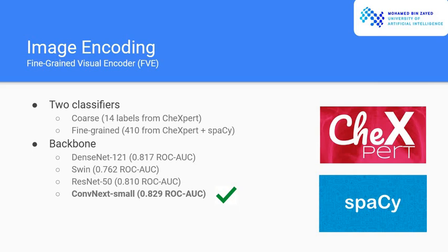Second method is a fine-grained visual encoder. It consists of two classifiers: one coarse classifier that is trained on 14 labels taken from the CheXpert labeling library. The second classifier is based on fine-grained labels that we got using CheXpert and SpaCy. SpaCy is an NLP library. Basically we got extra labels in the form like severe pneumonia, moderate pneumonia, et cetera, and trained the classifier on those labels.